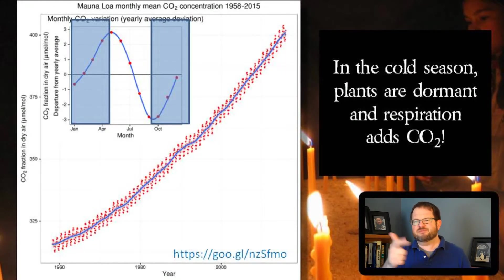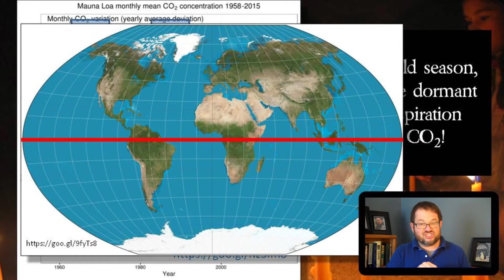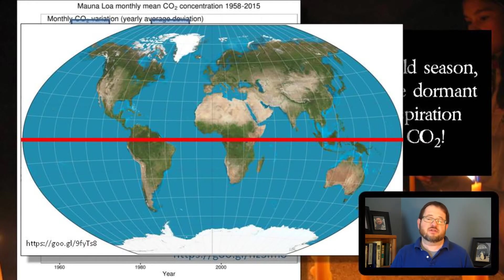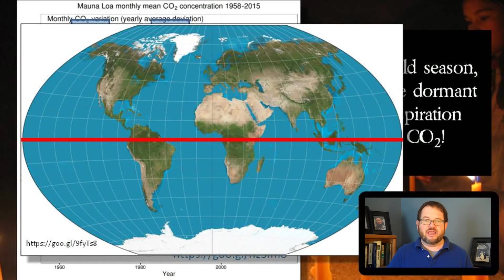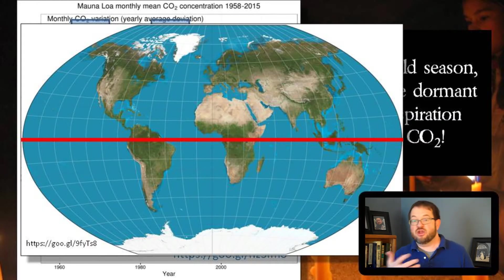This makes good sense until you think about the fact that we're talking globally. If it's the warm season in the northern hemisphere, it's the cold season in the southern hemisphere, so you'd think it would cancel out. But it doesn't, because there's far more land in the northern hemisphere than the southern hemisphere, and plants live on land. A lot of the southern hemisphere land is Antarctica, where there are no plants. So summer in the northern hemisphere dominates — there are so many more plants consuming enormous amounts of CO2 that carbon dioxide globally goes down.